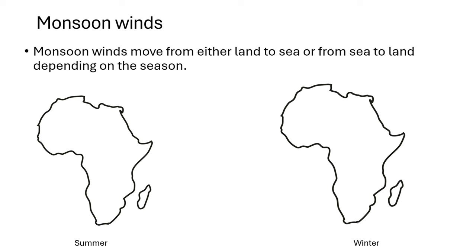Welcome to Educate. I strongly recommend you watch our previous video on the Term One revision, where we revised the atmosphere, global air circulation, pressure cells, and so on. From that video, we understood that wind is just the flow of air. Remember that air always flows from a high pressure cell to a low pressure cell. This is just a rewind so that you understand how monsoon winds work.